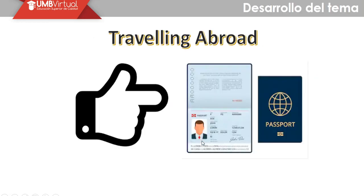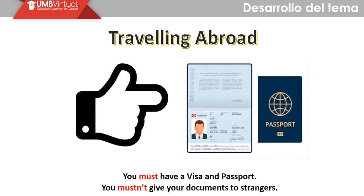Let's watch some images and make sentences. 'You must have a visa and a passport.' 'You mustn't give your documents to strangers.' The first one is positive, the second one is negative, using a contraction.